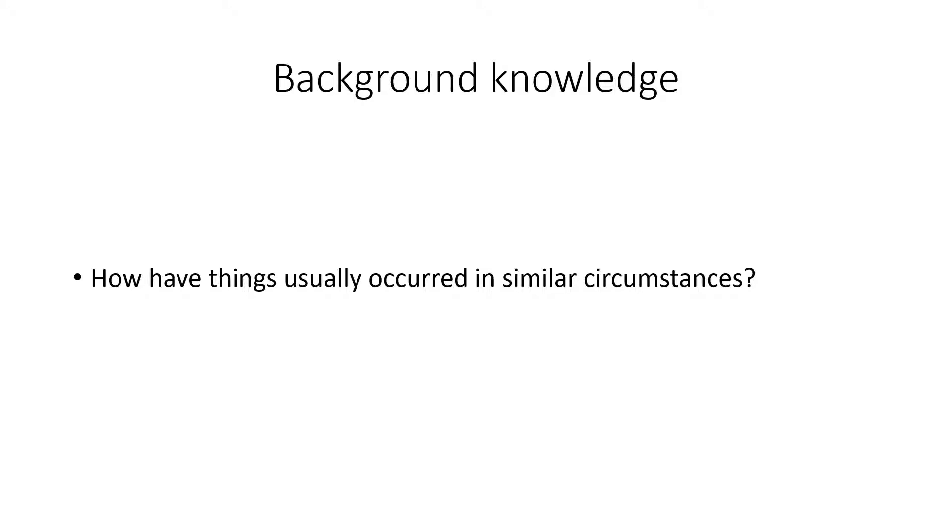Another criterion is how well the explanation fits with our background knowledge. And that means how have things usually occurred in similar circumstances. We can think about the explanation that the car being stolen is that if you have somebody who has come to retrieve their car and it's not there, normally what's usually occurred is the car has been stolen. But then there's other things that other competing explanations that will share that background knowledge, such as a spouse taking the car and has forgotten to tell you that they were going to take it, that's happened.